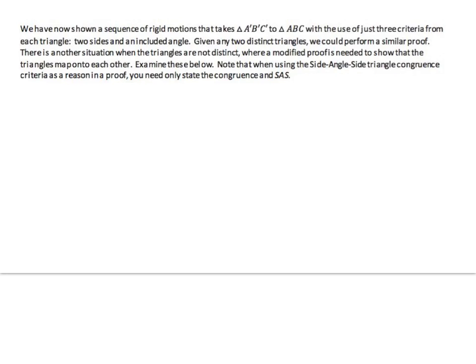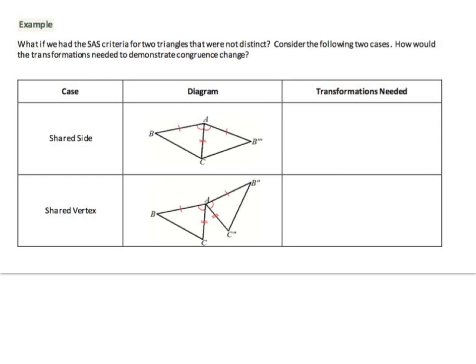The two sides and the included angle — remember the sides with the included angle between them are important. Given any two distinct triangles, we can perform a similar proof. There is another situation where the triangles are not distinct and a modified proof is needed to show the triangles map onto each other. Examine these cases below.